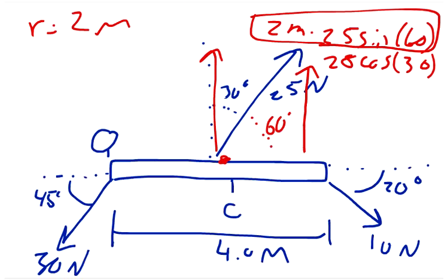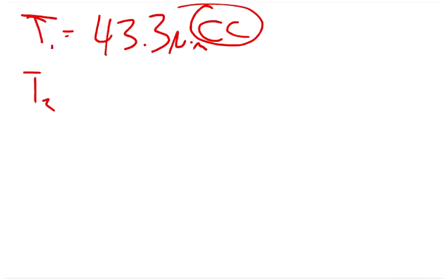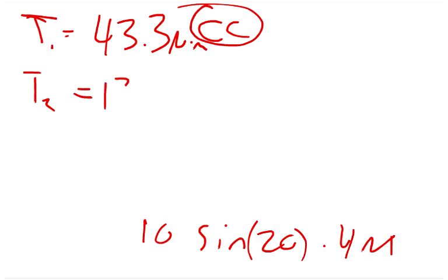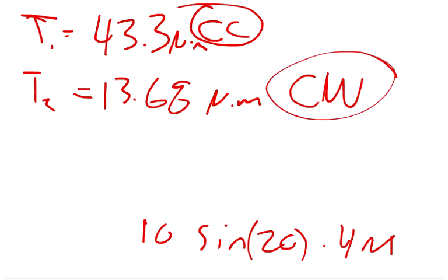Then we do T2. T2 was 10 newtons and it's at 4 meters. So 10 newtons sine 20, so 10 sine of 20 degrees times the 4 meters. This gives us a torque of 13.68 newton meters in the clockwise, we'll call it clockwise, CW, clockwise direction.